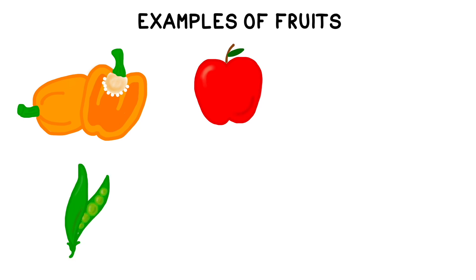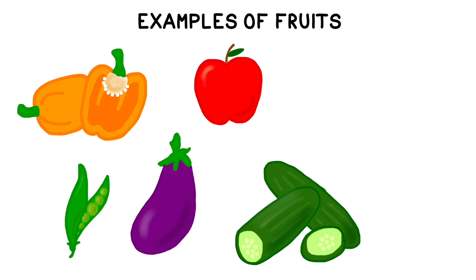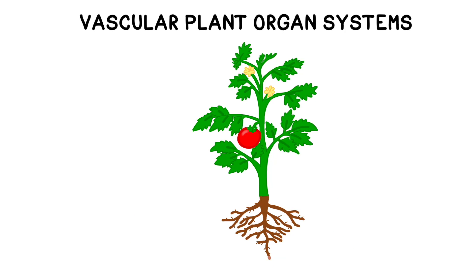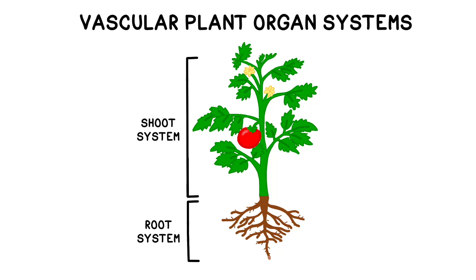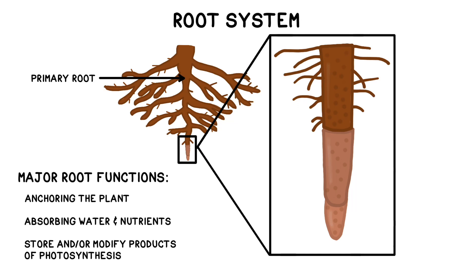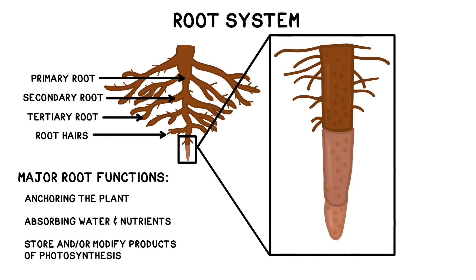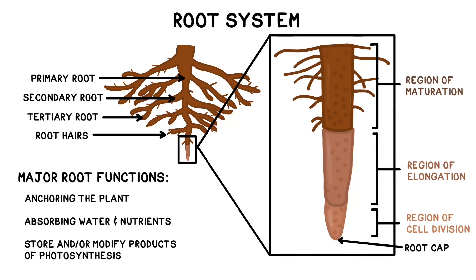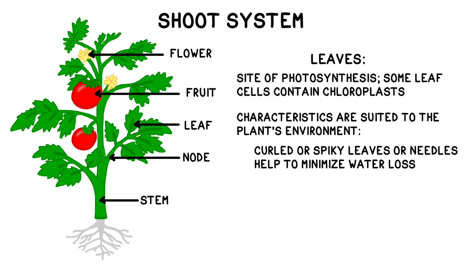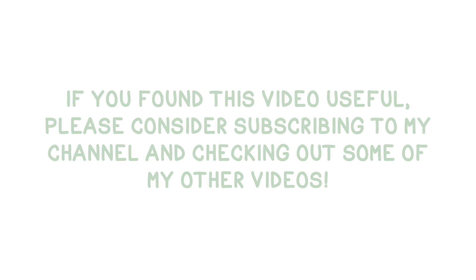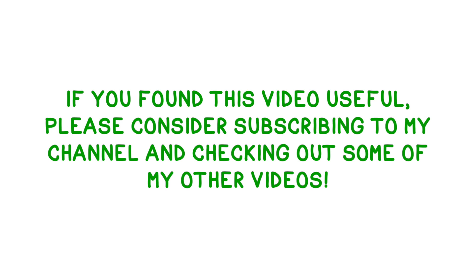Apples, bell peppers, pea pods, cucumbers, eggplants, squashes, and more are technically all fruits, because they developed from the mature center of the flower. In summary, vascular plants have two major organ systems: the root system and the shoot system. Within each organ system, there are a number of useful structures that help the plant to absorb what it needs from its environment and to perform photosynthesis. If you found this video helpful, please consider subscribing and checking out some of my other videos. Thanks for watching — see you next time.